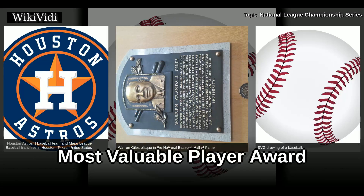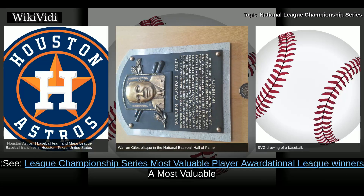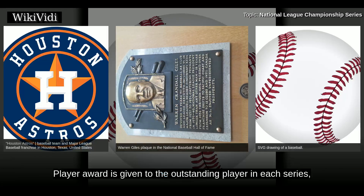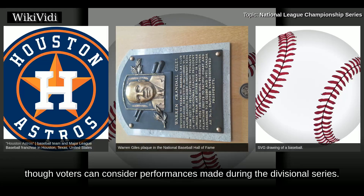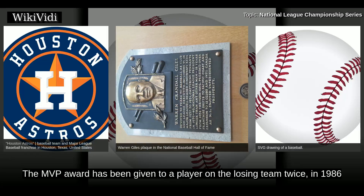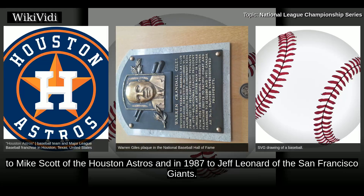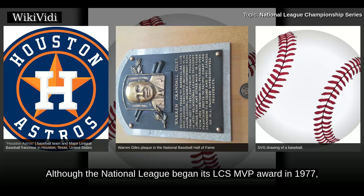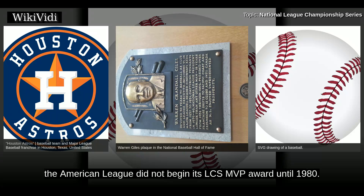Most Valuable Player Award. A Most Valuable Player Award is given to the outstanding player in each series. Though voters can consider performances made during the divisional series, the MVP award has been given to a player on the losing team twice — in 1986 to Mike Scott of the Houston Astros, and in 1987 to Jeff Leonard of the San Francisco Giants. Although the National League began its LCS MVP award in 1977, the American League did not begin its LCS MVP award until 1980.